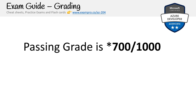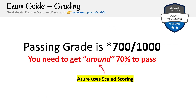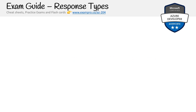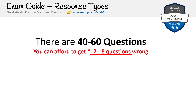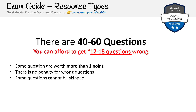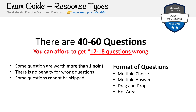In terms of grading, you need to get about 70% to pass. They use scaled scoring, so it's not always exactly on the dot, but generally 70% should get you passing. The number of questions is between 40 and 60 — you'll probably see around 55 questions, meaning you can afford to get about 12 to 18 wrong. Some questions are worth more than one point, there's no penalty for wrong answers, and some questions cannot be skipped. Question formats include multiple choice, multiple answer, drag and drop, hot area, and case studies — much more difficult than the AZ-900 for sure.